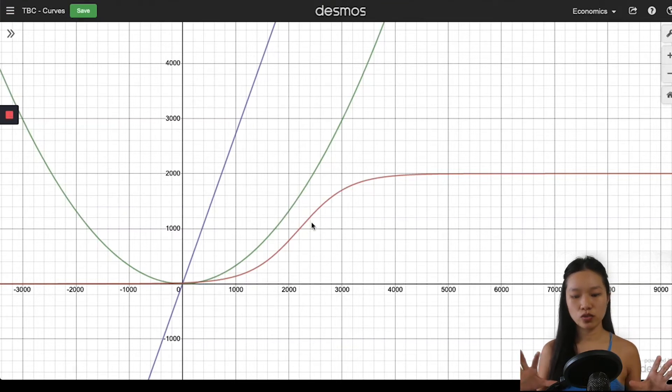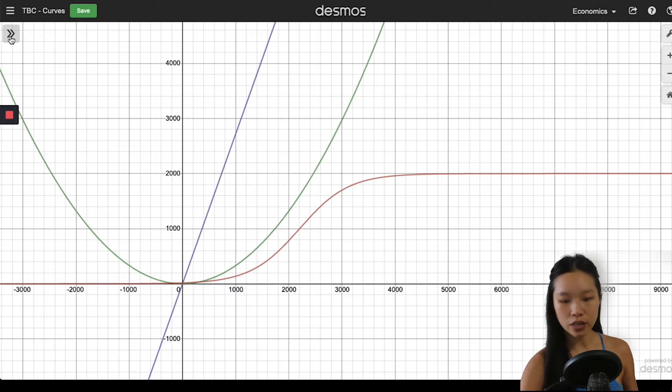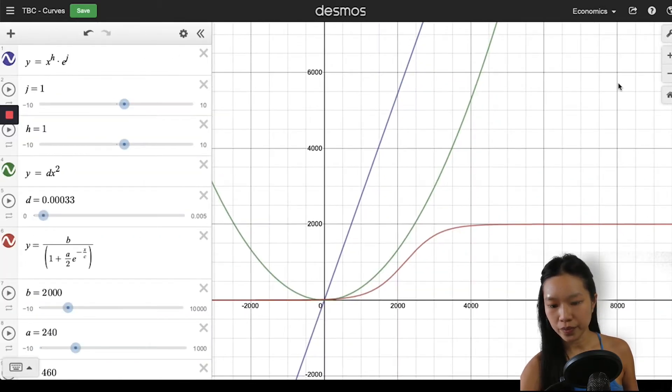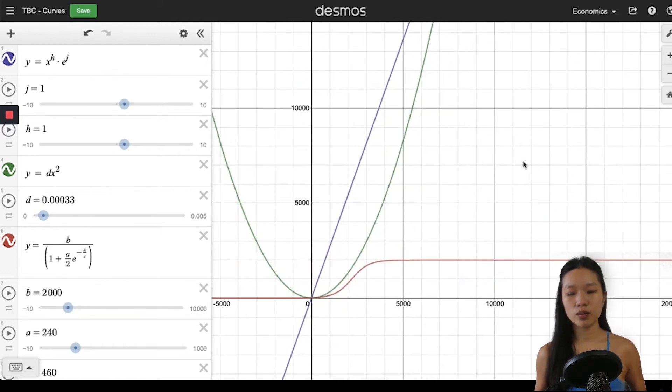What I've done is draw out the three different kinds of curves. We have the linear curve, which is the purple line that you see over here. I will also use it to explain both the linear function and the logarithmic function.